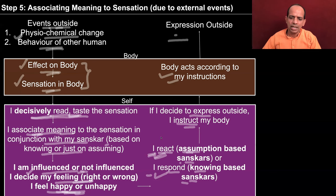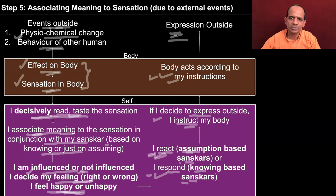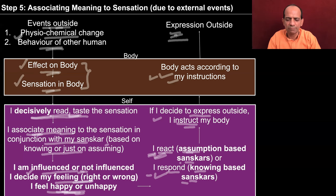Then you decide to express outside, you instruct your body. So you instruct the body that the mosquito has to be killed, and then the body acts according to the instruction, and there is the expression outside — the mosquito gets killed. You could also decide to let the mosquito fly away, so you would give a different kind of instruction to the body — in place of trying to kill the mosquito, you would have tried to let it go. That could be another expression.